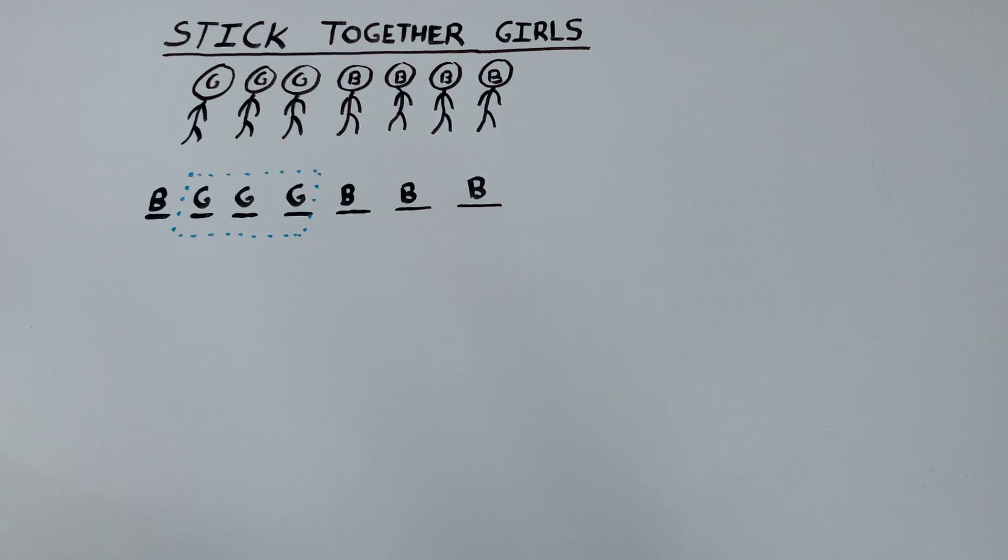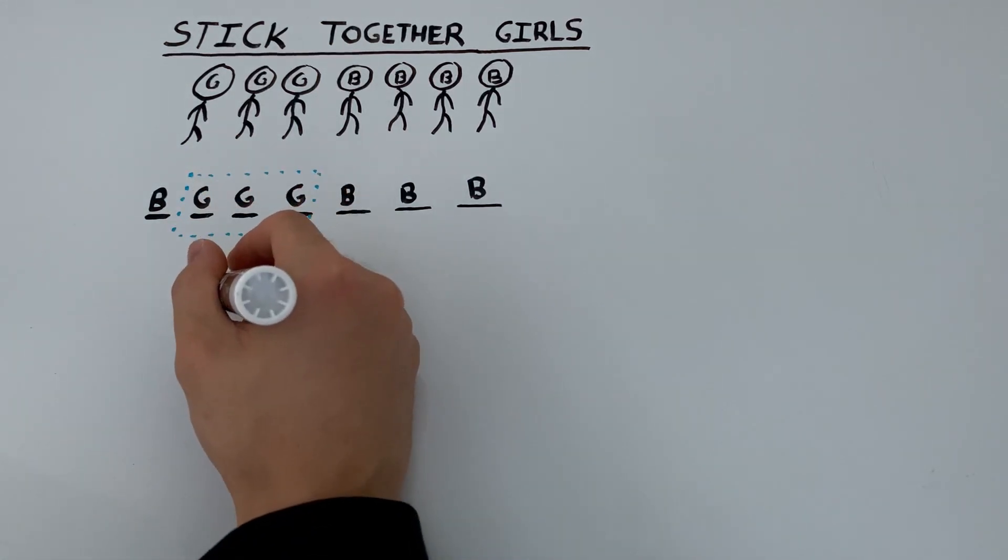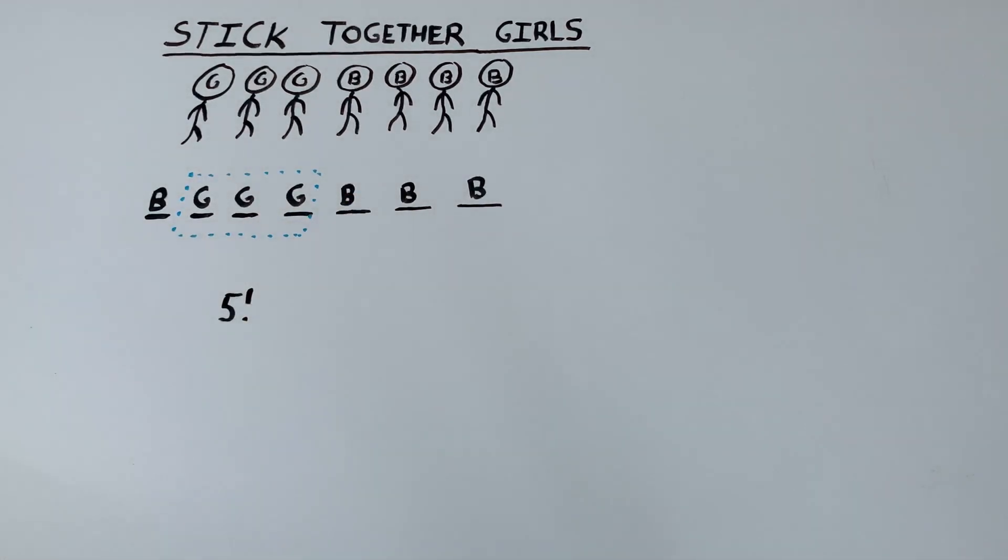So the problem has been reduced to arranging five objects. Five objects can be ordered in five factorial ways. But is the final answer five factorial? No, it is not.